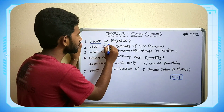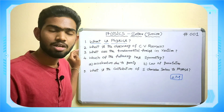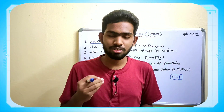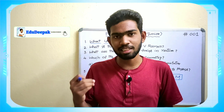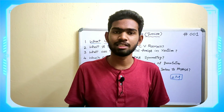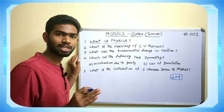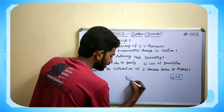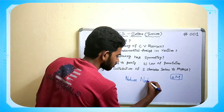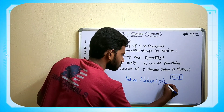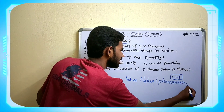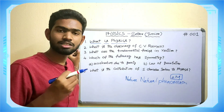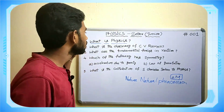In a simple way, we can learn the first question: What is physics? Physics is a branch of science. Physics is the branch of science which deals with the study of nature and natural phenomena. In the examination, we have to write: physics is a branch of science which deals with the study of nature and natural phenomena.